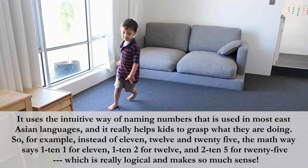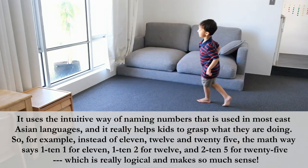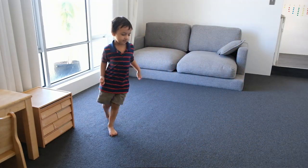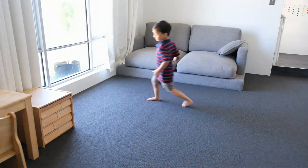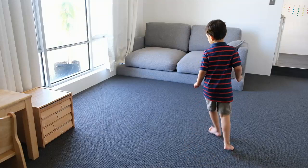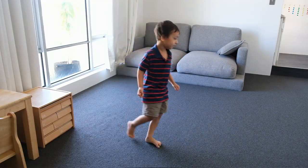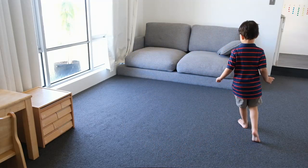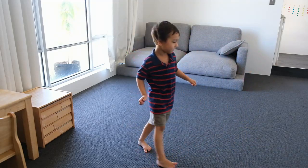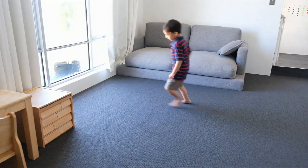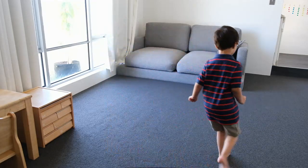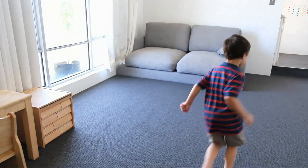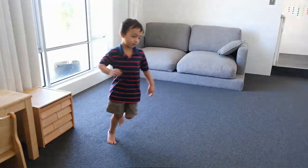Six plus six equals twelve. Seven plus seven equals fourteen. Eight plus eight equals sixteen. Nine plus nine equals sixteen. Ten plus eight equals twenty.